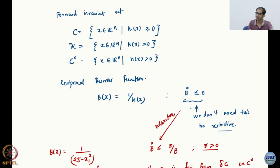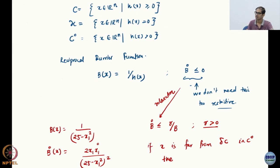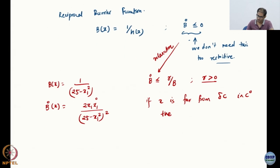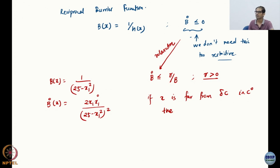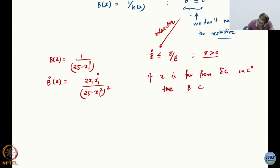This is not going to be very obvious how we are doing it. But the rationale for doing this, at least as stated here, is that the inequality allows for B_dot to grow when solutions are far from the boundary. So basically, if x is far from δC in C naught, then B is positive — because of how you have constructed it. B is going to be positive because I took 1 over h(x) and h is positive in the interior.